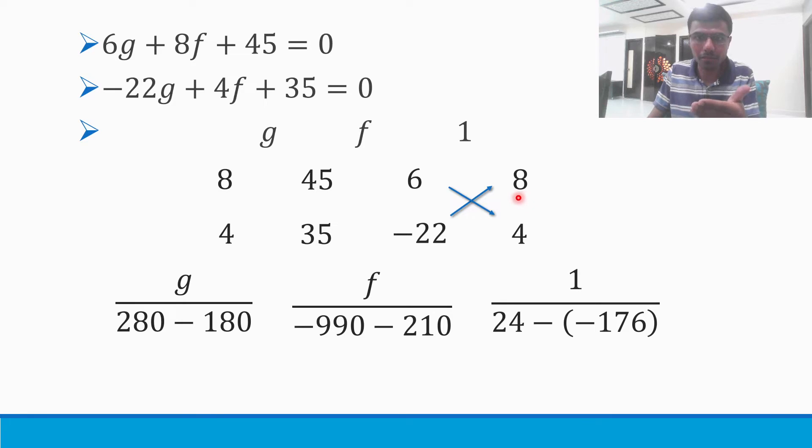That would be nothing but 176. Now listen here, it's -176. -22 × 8 is -176, and already there is a minus in between. This is how I get it. Now just solve it.